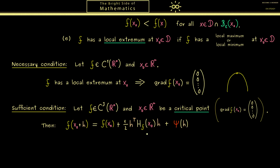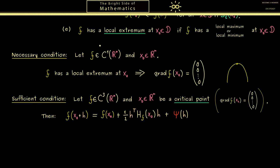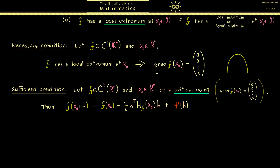If h is small enough, the whole behavior around x0 is described by the Hessian term. In other words, the Hessian matrix should tell us if we are at a local maximum or at a local minimum. In addition, it would be nice if it could also tell us whether we are at a local extremum at all — and indeed we are able to distinguish different cases.